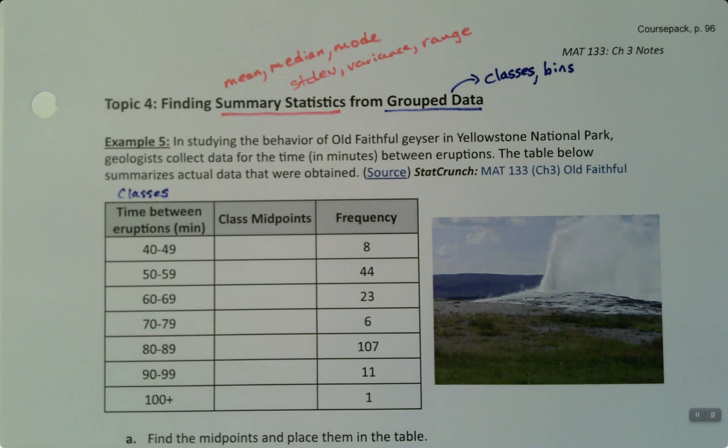Okay, so let's look at what we have here. In studying the behavior of Old Faithful geyser in Yellowstone National Park—that's an actual photo of Old Faithful that I took—geologists collect data for the time in minutes between eruptions. The data below summarizes actual data that were obtained. And I have this dataset apparently in StatCrunch for us to look at.